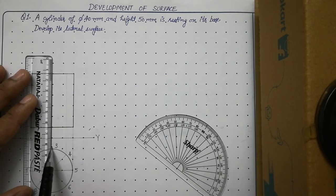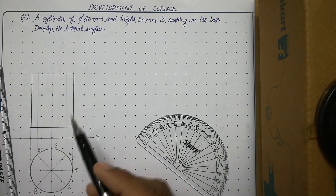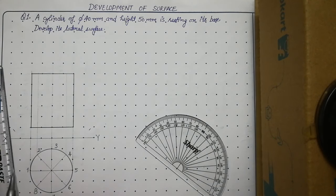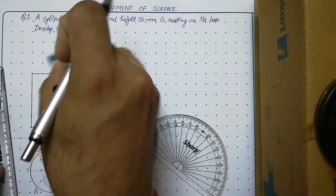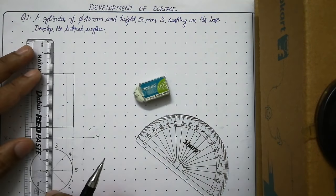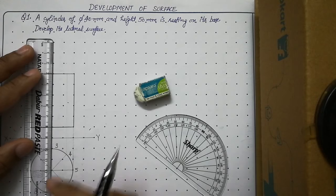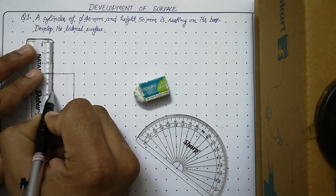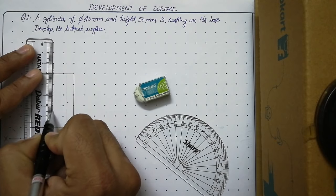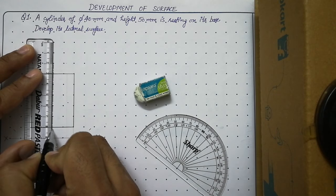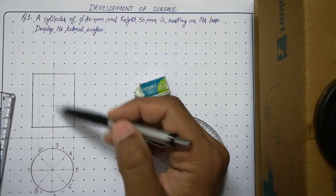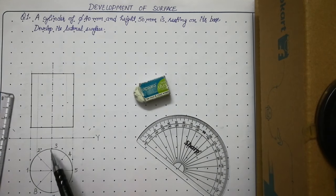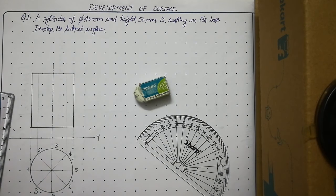Take one more projector from points 3 and 7 — it must be thin. Convert this projector into a center line by following chain thin line convention. This center line also serves as the generator number 3 and generator number 7 on the surface of the cylinder.